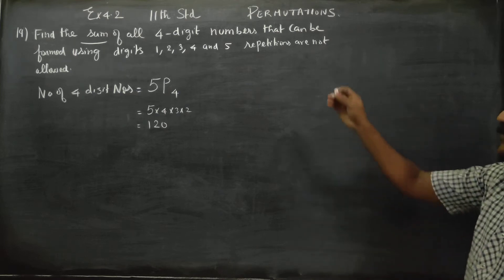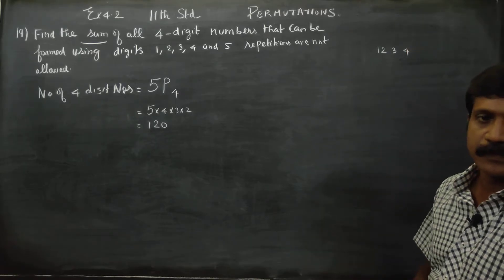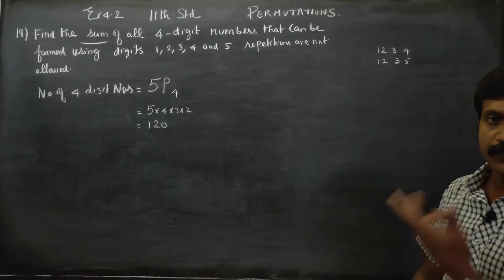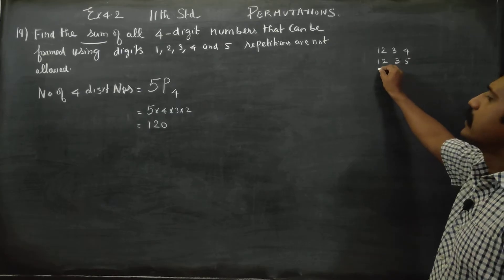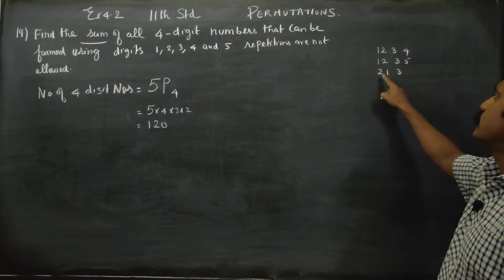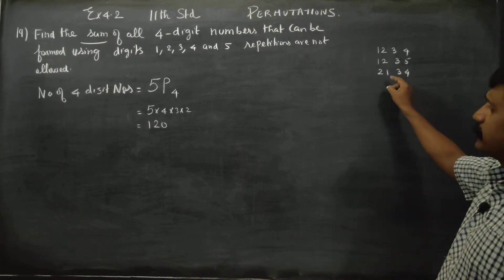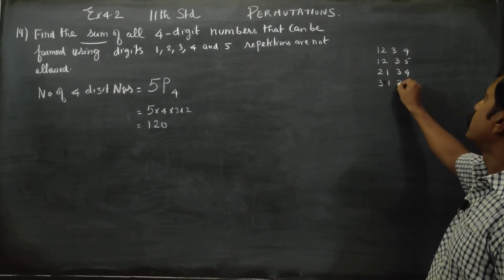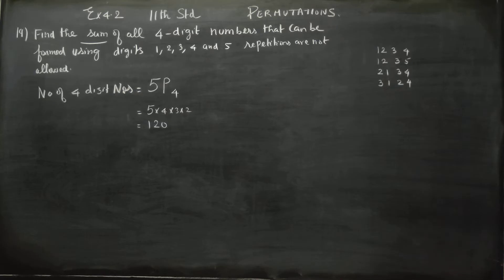For example, 1, 2, 3, 4 is a 4-digit number. 1, 2, 3, 5 is a 4-digit number. Repetitions are not allowed. 2, 1, 3, 4 is another 4-digit number — that is not a repetition. Similarly, 1, 2, 4 arrangements differ. So how many 4-digit numbers are there? 1, 2, 3, 4 — there are 120 such numbers.